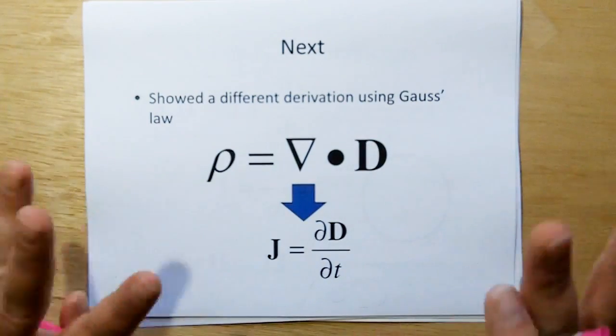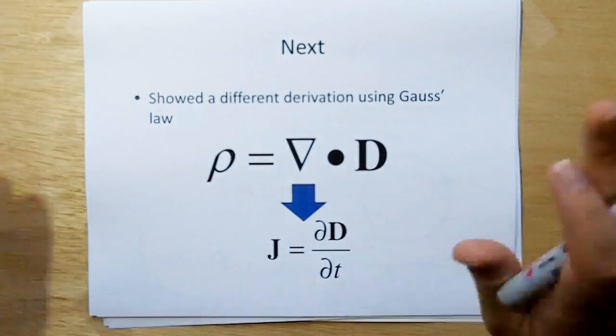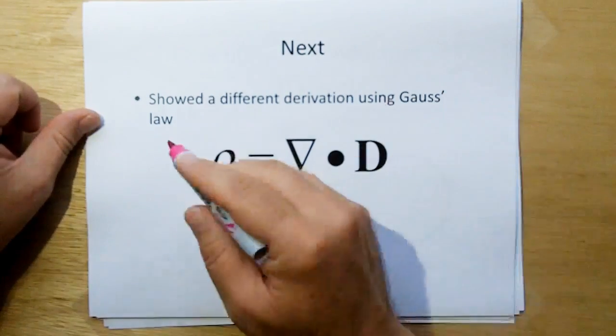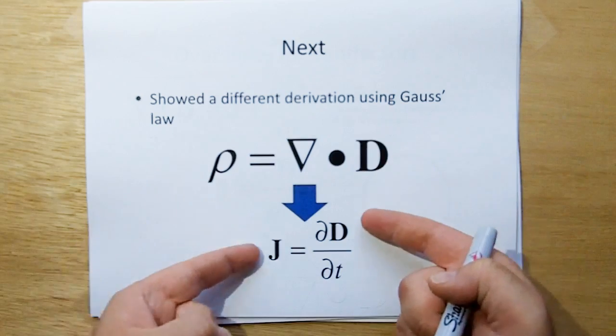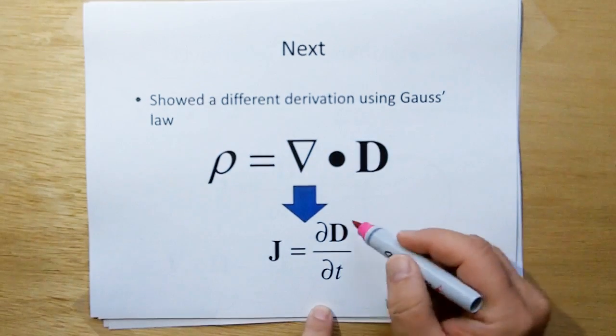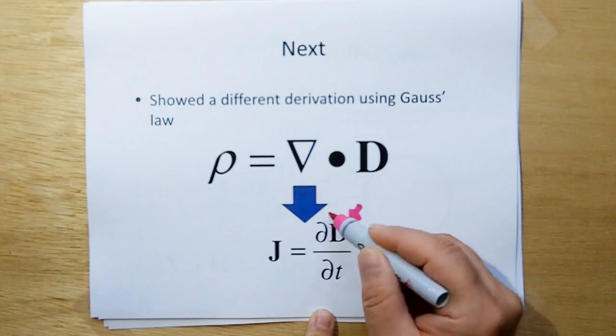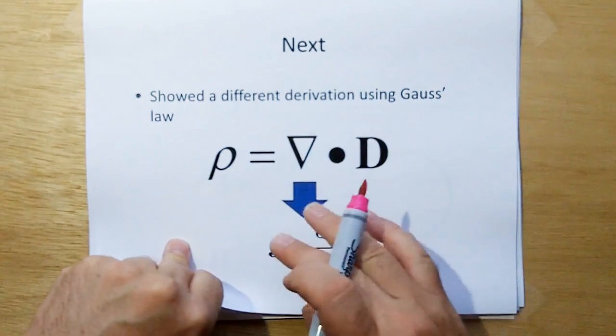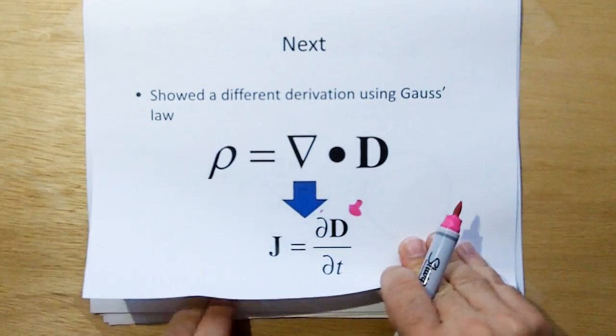So in the next part of the video I show a derivation which gives me the same answer, which is based on a completely different derivation, but I get the same answer. I use Gauss' law to show that the changing flux around a current, electric flux, is ∂D/∂t. So the current in the wire also produces a ∂D/∂t, a changing electric field.